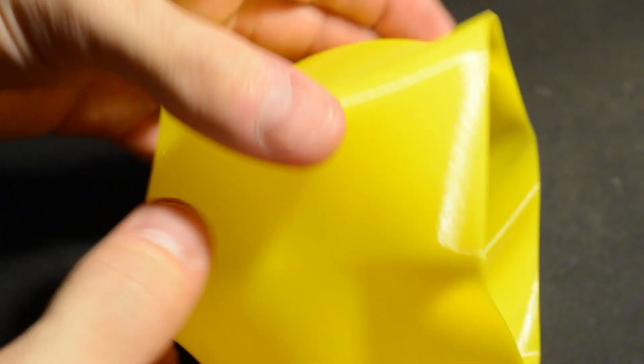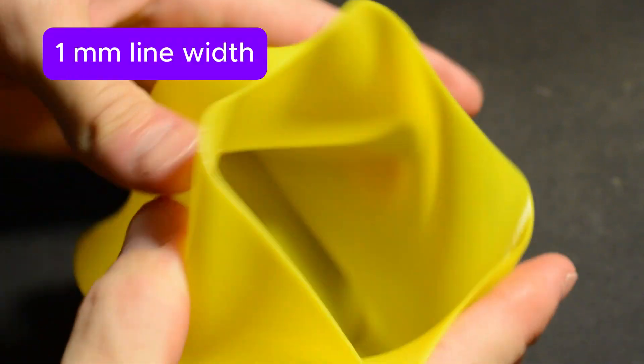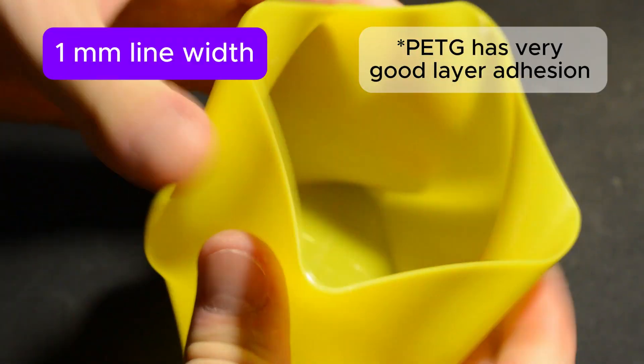Next vase Yellow PETG, same 1 mm wall thickness. This one is stronger due to different plastic.